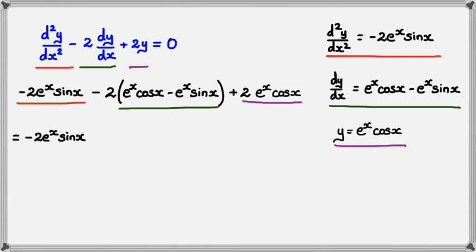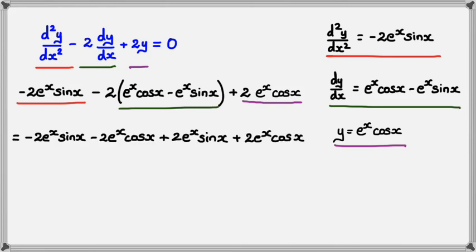Expanding: I have −2eˣ sin x, then expanding the green part gives −2eˣ cos x plus 2eˣ sin x, and the purple part gives plus 2eˣ cos x. The two sin x terms cancel each other out, and the two cos x terms cancel each other out, giving a final answer of zero. And basically, this is how you check solutions for differential equations — differentiate the function and then match it to whatever they're asking you to verify. That's all for this session. Thank you for watching.